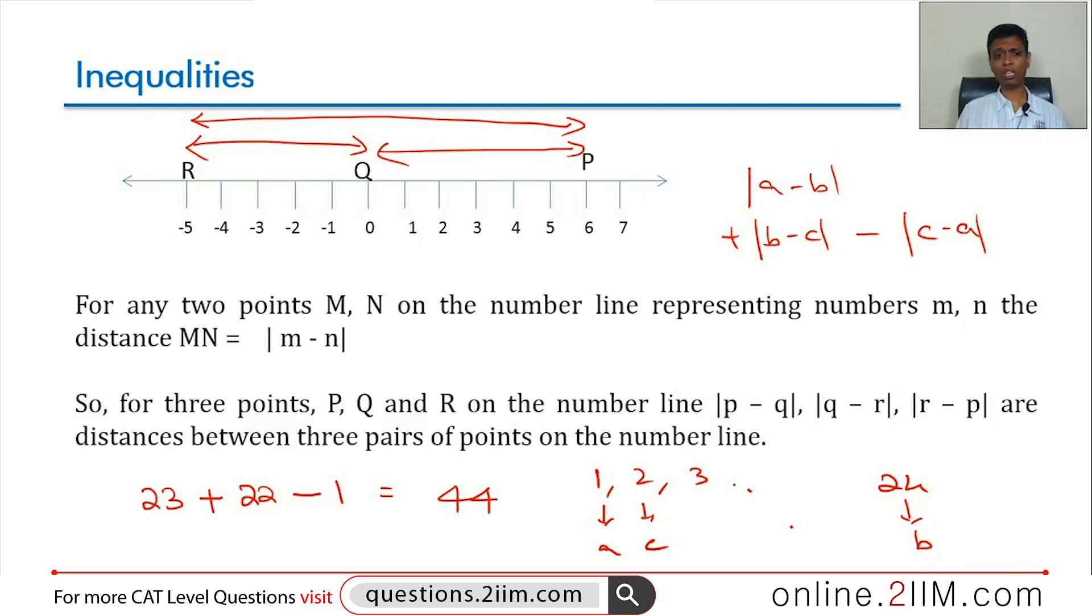You could have done the same thing with B as 1 and A and C as 23, 24. The answer would remain the same. We are talking about distances. The modulus make sure that we do not have to worry about which end you are thinking about.